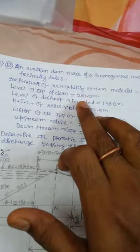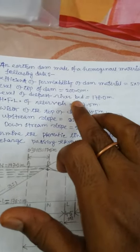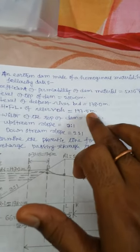Level of top of dam: 200.0 meter. Level of deepest riverbed: 178.0 meter. HFL of reservoir: 177.5 meter.